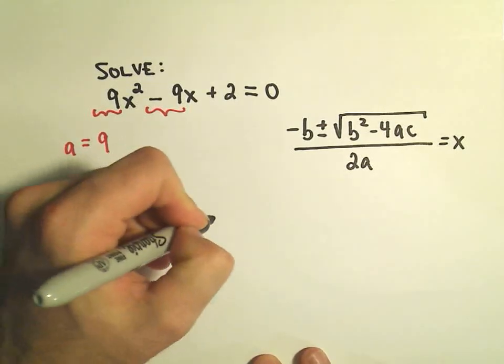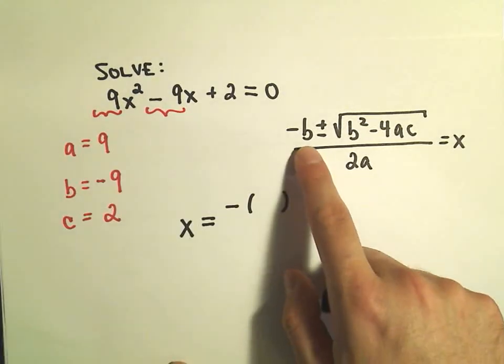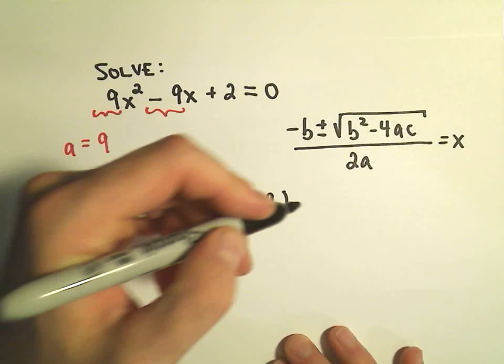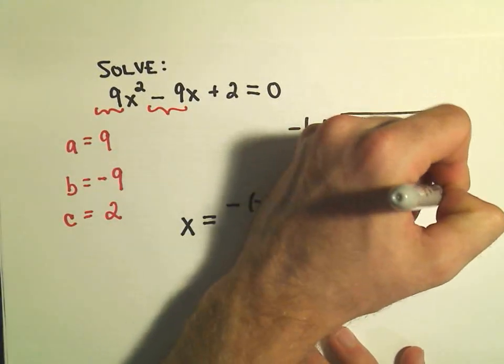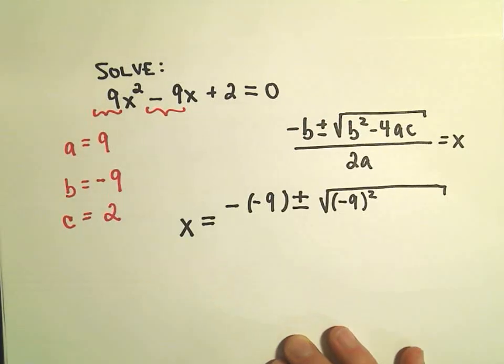It says x is going to equal, we take the negative of the b value, so we have to take negative of negative 9, plus or minus the square root, and then it says we take b, again which is negative 9, and we square that.